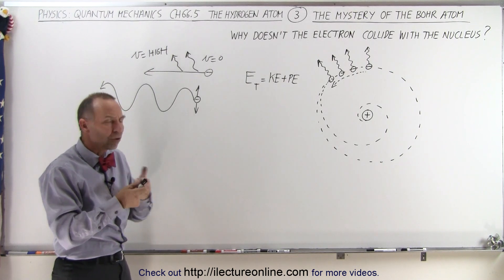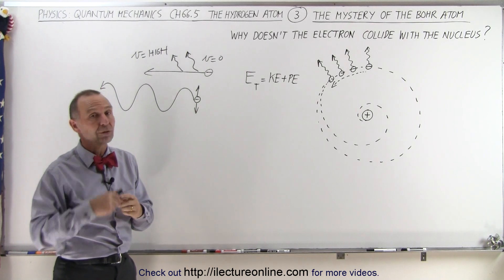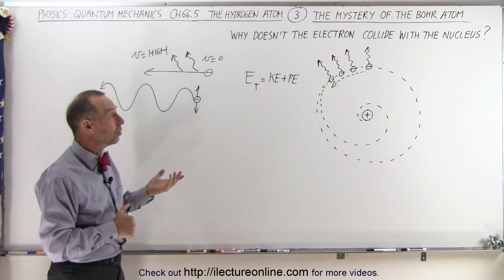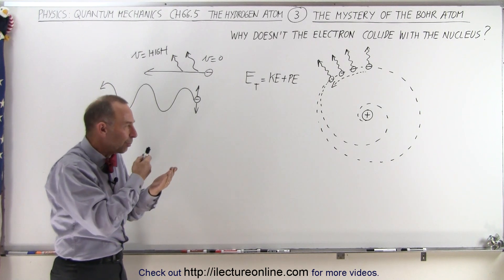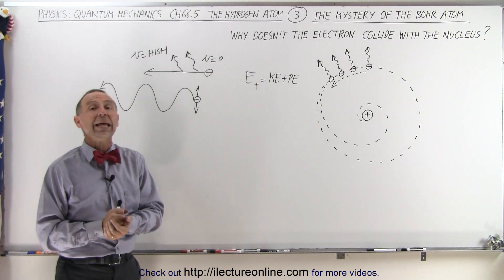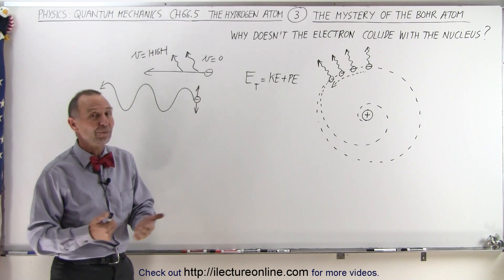Somehow, electrons were not radiating energy and therefore staying in orbit. And we're going to explore why that is so, and that is some of the fundamental theories and some fundamental properties of the quantum mechanics we're going to be studying in the Bohr atom. There you go, another mystery to be solved.